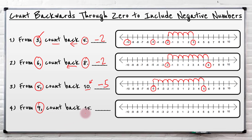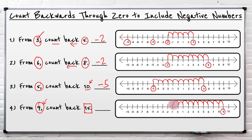Now we're at nine and this time we're going to count back fifteen. So let's find the nine first and count back fifteen: one, two, three, four, five, six, seven, eight, nine, ten, eleven, twelve, thirteen, fourteen, fifteen. And I've ended up at the number minus six. So whenever you're at a positive number, you can actually take away more than what the positive number is worth and end up in negative numbers. Using a number line is really useful.